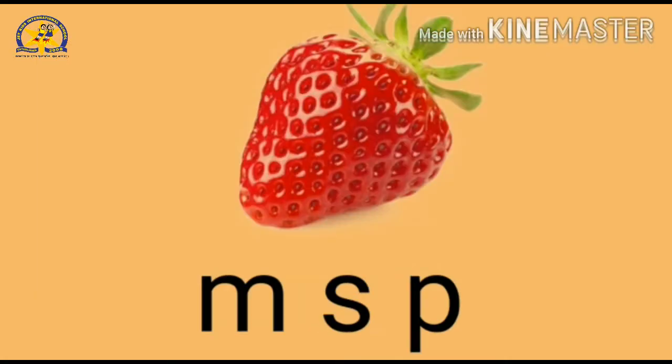Now what's this? Oh, I love to eat it. It's a strawberry! Correct! What's the beginning sound of this word? Strawberry... S! So which letter we have to circle? We have to circle letter S. So circle it children. Very good! Clap for yourself!